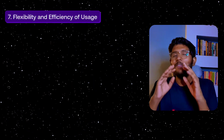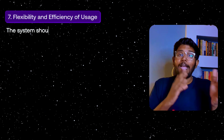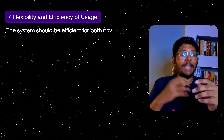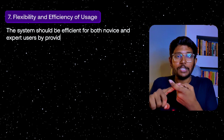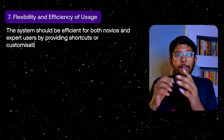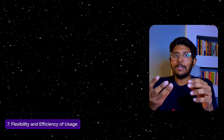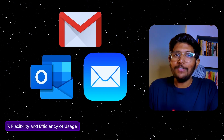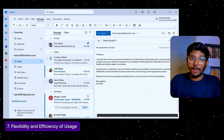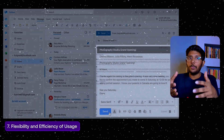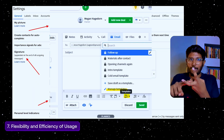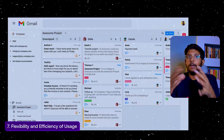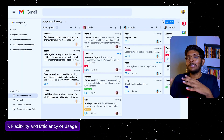Seventh principle: Flexibility and Efficiency of Use. For all users and expert users, the interface should be efficient and provide customization and personalization options. For example, in email apps, new users can use basic functionalities like compose or reply, while expert users can set shortcuts, filters, and automate repetitive tasks. New users get a simple interface; expert users improve their efficiency with advanced features.